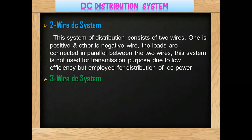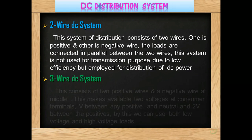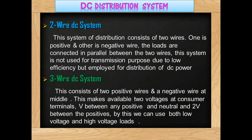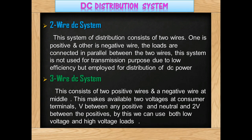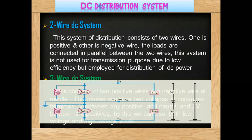Now, the 3-wire DC system consists of two positive wires and a neutral wire. This makes available two voltages at consumer terminals: V between any positive and neutral, and 2V between the two positives. By this, we can use both low voltage and high voltage loads.